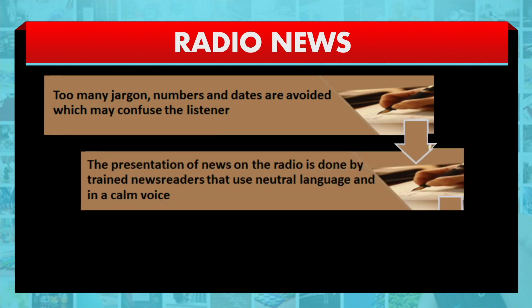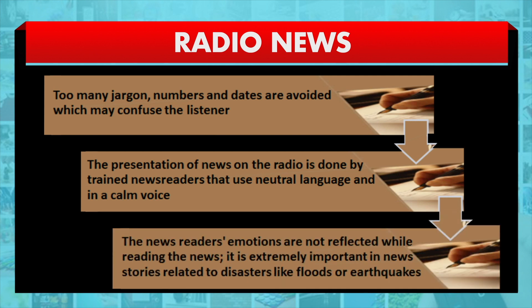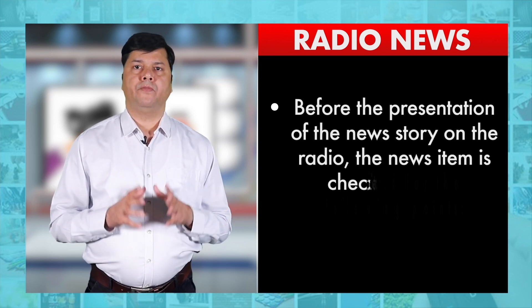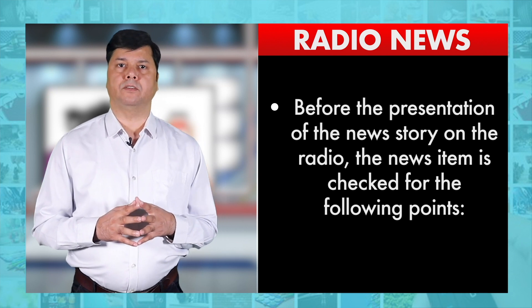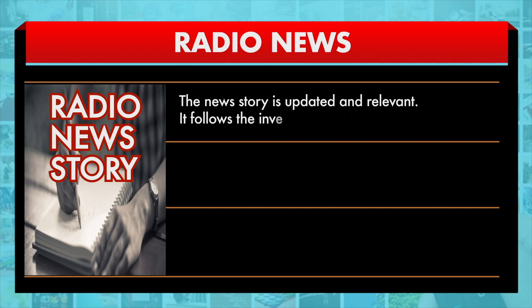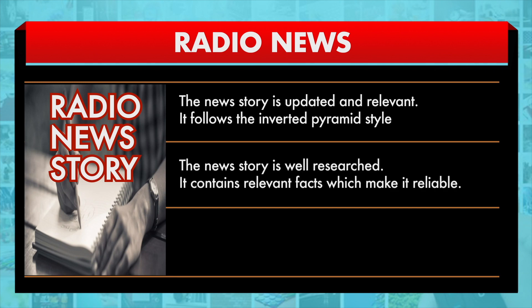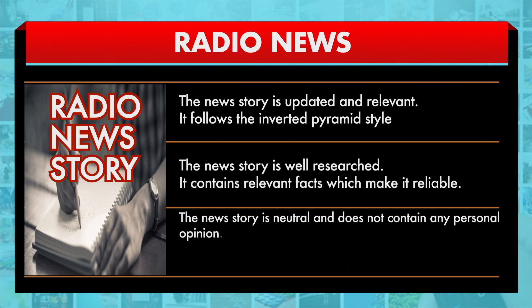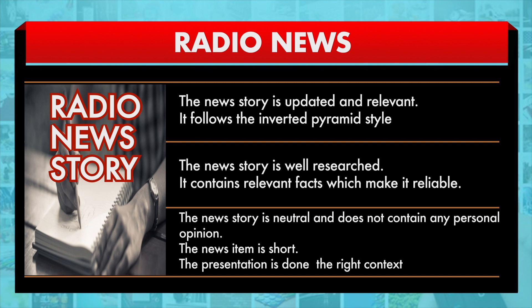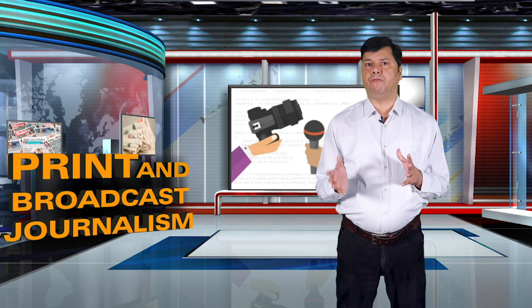The presentation of news on the radio is done by trained news readers who use neutral language in a calm voice. The news reader's emotions are not reflected while reading the news, which is extremely important in news stories related to disasters like floods or earthquakes. Before the presentation of the news story on the radio, the news item is checked for the following points: it is updated and relevant, follows the inverted pyramid style, is well researched and contains relevant facts making it reliable, is neutral and does not contain any personal opinion, is short, and the presentation is done in the right context within the wider radio broadcast.